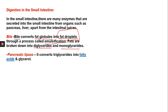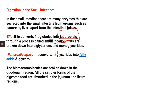Pancreatic lipase converts diglycerides into fatty acids and glycerol. The large biomolecules are broken down in the duodenum region, which is the first region of the small intestine. All the simpler forms of digested food are then absorbed in the jejunum and ileum.